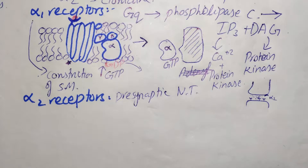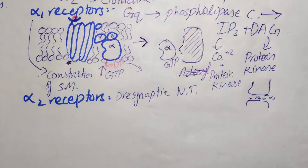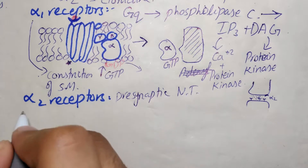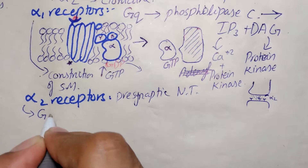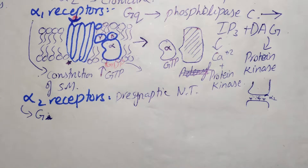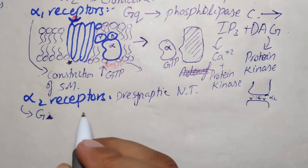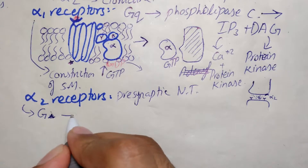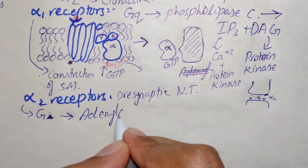Alpha 2 receptors actually act as inhibitory autoreceptors. They are also found presynaptically on parasympathetic neurons. In contrast to alpha 1 receptors, the effect of binding at alpha 2 receptors is mediated by inhibition of adenylyl cyclase, reducing the level of intracellular cyclic AMP. This is a GI-mediated receptor, meaning the coupled G protein is inhibitory.